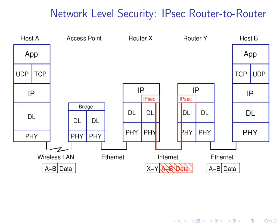There's no encryption across the internal networks — we must trust those segments — but we have encryption across the internet, which is usually what we want. The internet is a public network; we don't want others to see our data. We want a private network between router X and Y, but we can't afford to build a dedicated private network, so we create a virtual one by encrypting data between those two points. This is called a Virtual Private Network — a VPN.